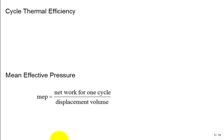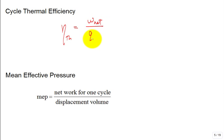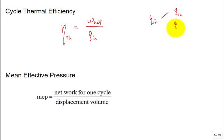We're interested in calculating the cycle thermal efficiency — eta — the thermal efficiency. It's the net work out of the cycle divided by the Q that comes into the cycle. Where does Q come into the cycle for the Otto cycle? Is it Q one to two, Q two to three, Q three to four, or Q four to one? Answer A, B, C, or D?